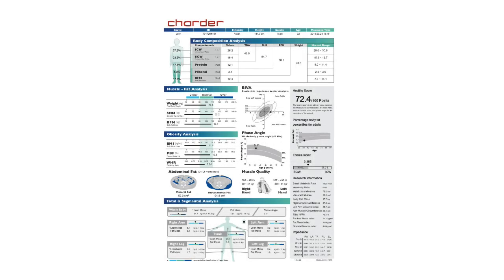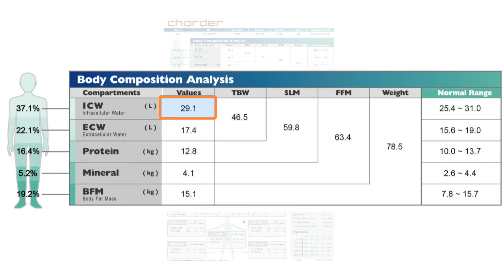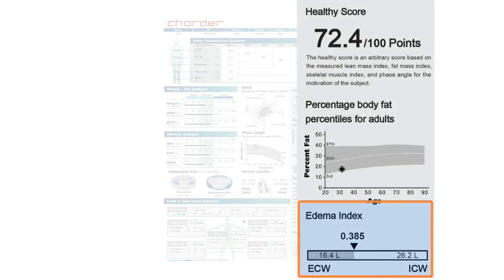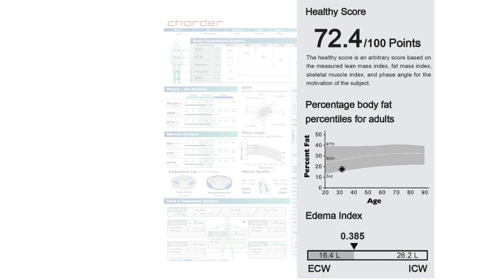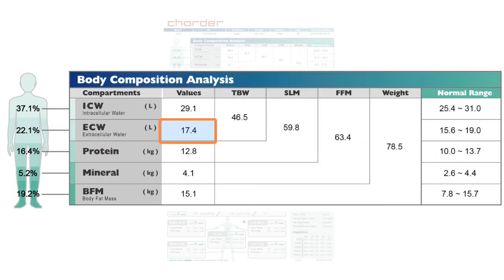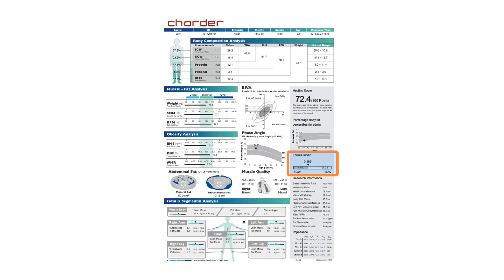Intracellular water (ICW) plus extracellular water (ECW) equals total body water (TBW). The edema index is calculated by dividing ECW by TBW, and the normal range is between 0.36 and 0.39. If the edema index exceeds 0.39, that means ECW is too high, which is often caused by illnesses affecting body water — such as inflammation, kidney deficiency, or cardiac problems — and we would recommend getting a more detailed health check to confirm if something's wrong.